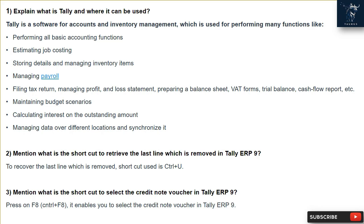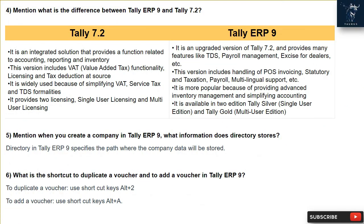Question 4: What is the difference between Tally ERP9 and Tally 7.2? Tally 7.2 is an integrated solution that provides functions related to accounting, reporting, and inventory. This version includes VAT (Value Added Tax) functionality, licensing, and TDS (Tax Deduction at Source). It is widely used because of its simplified VAT, service tax, and TDS formalities, and provides two licensing options: single user and multi-user licensing.